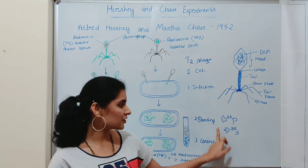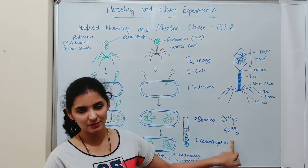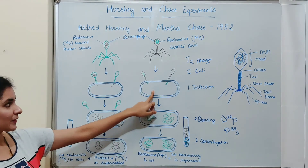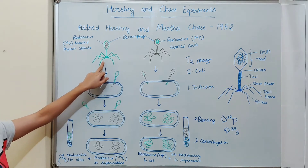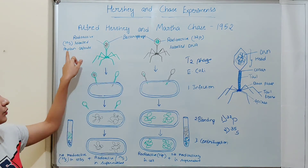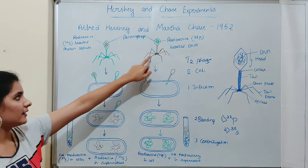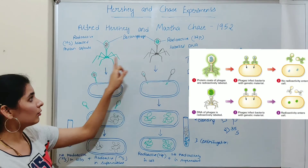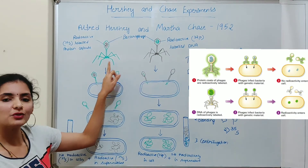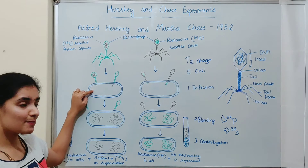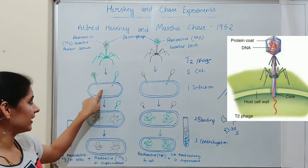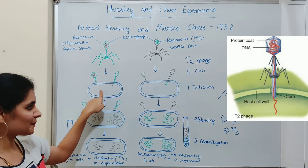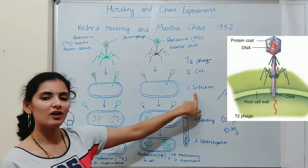After culturing T2 phage in two different culture media, they allowed the phages to infect bacteria. As you can see in this diagram, one bacteriophage has radioactive labeled protein and another has radioactive labeled DNA. They allowed both bacteriophages to infect the bacteria. As soon as the bacteriophage infects the bacteria, it releases its genetic material into the bacterial cell — this step is known as adsorption or infection.